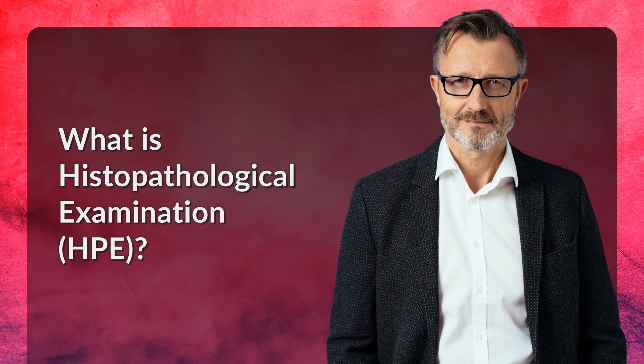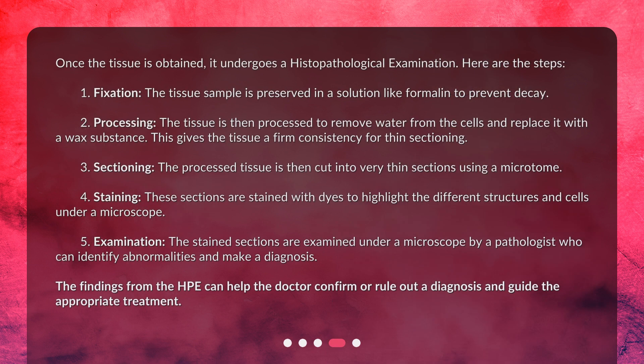Once the tissue is obtained, it undergoes a histopathological examination (HPE). Here are the steps: 1. Fixation — the tissue sample is preserved in a solution like formalin to prevent decay. 2. Processing — the tissue is then processed to remove water from the cells and replace it with a wax substance. This gives the tissue a firm consistency for thin sectioning.